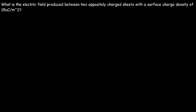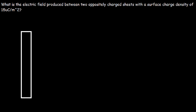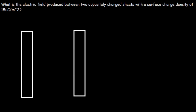Here's another problem. What is the electric field produced between two oppositely charged sheets with a surface charge density of 15 microcoulombs per square meter? Let's begin by drawing a picture. On one side we're going to have a positive charge on this plate, and on the other side it's going to be negatively charged. We know the electric field extends from the positive plate towards the negative plate.